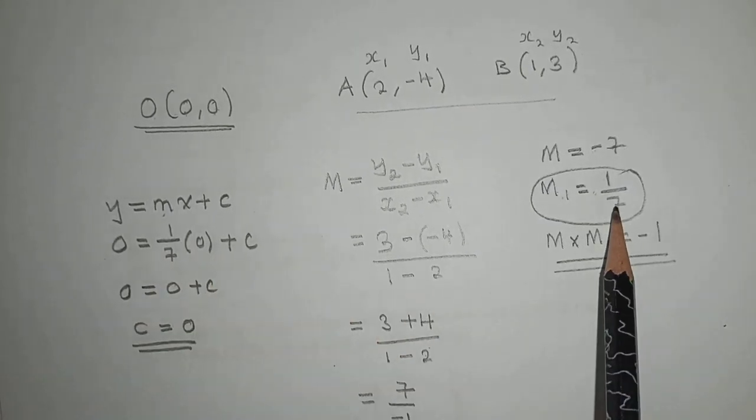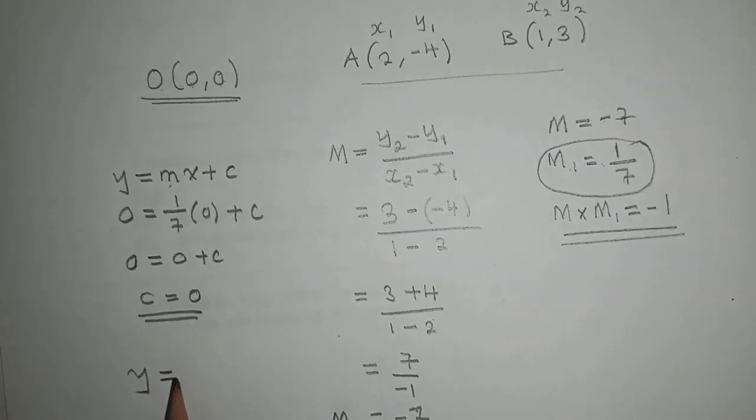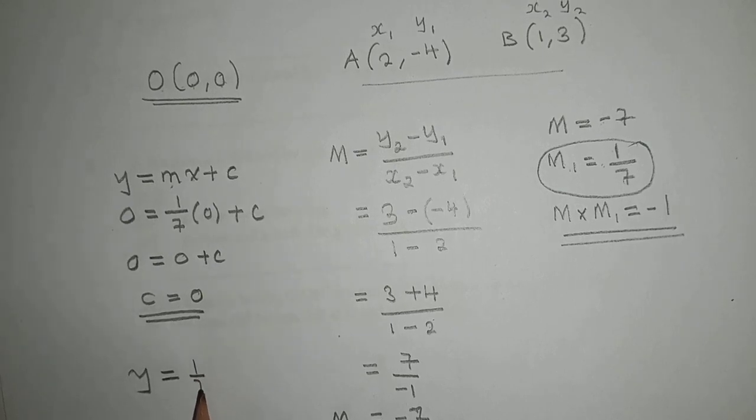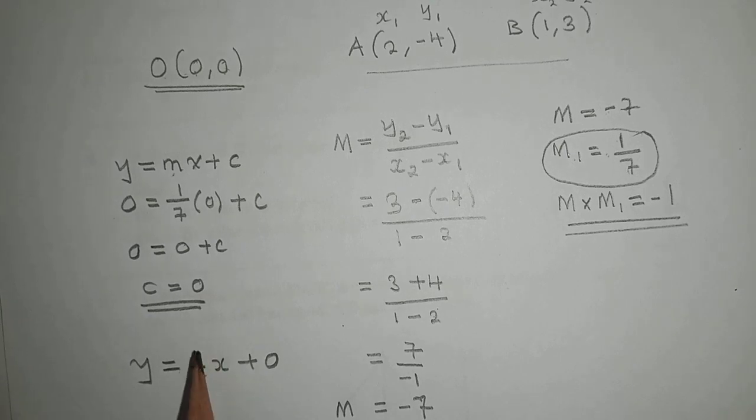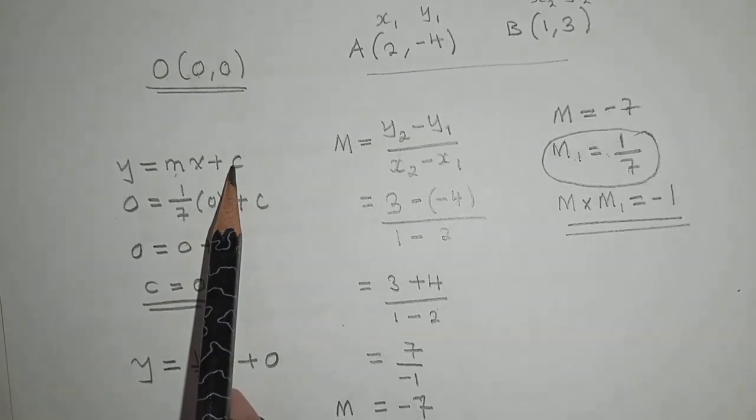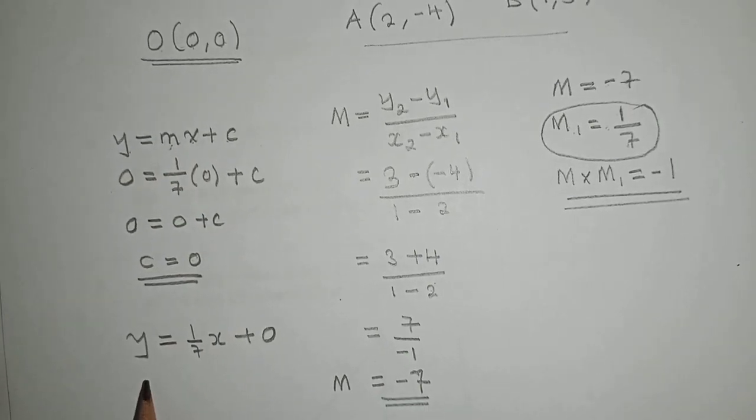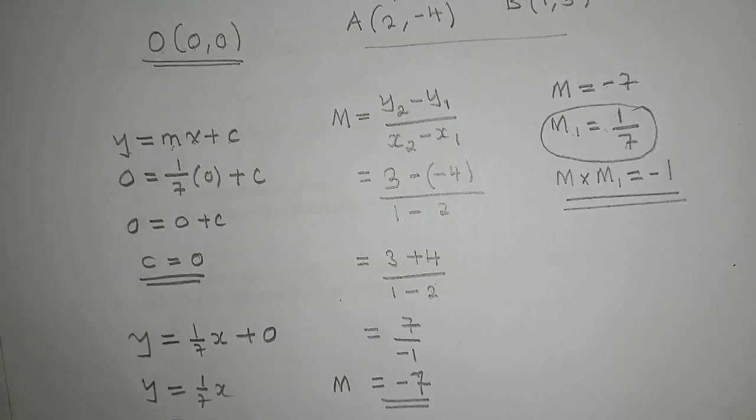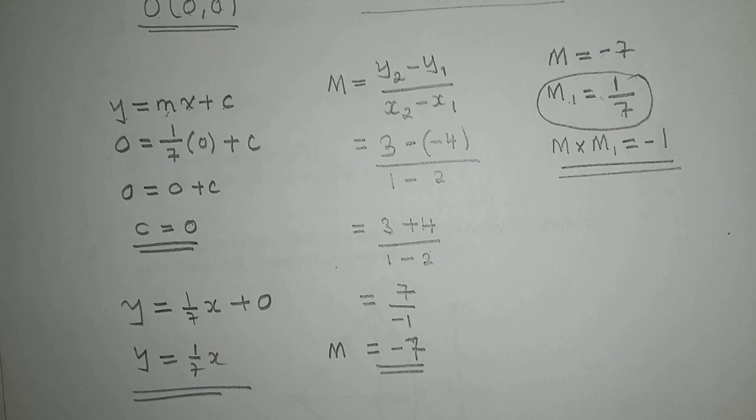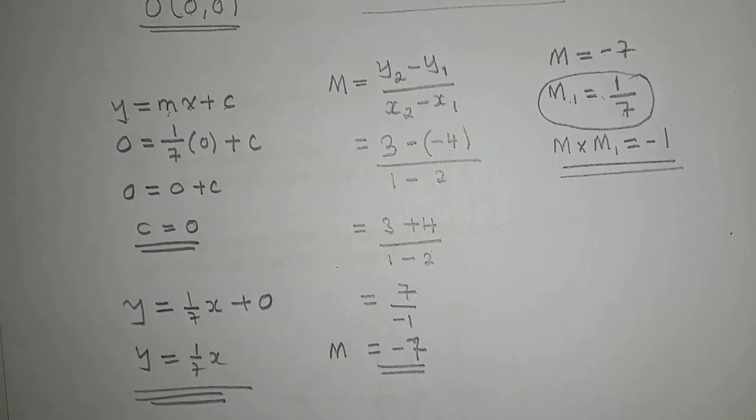Now that we've found c equals 0 and we have the gradient which is 1/7, we can write our equation: y equals 1/7 times x plus 0. The final answer is y equals 1/7 x. This is the equation we were asked to find. Thank you so much. Kindly subscribe and like, and also comment if you have any questions.